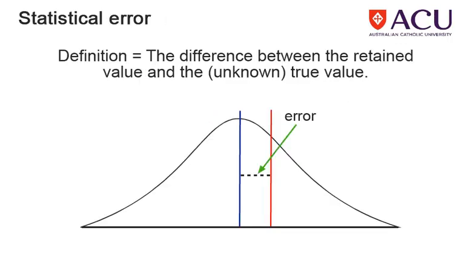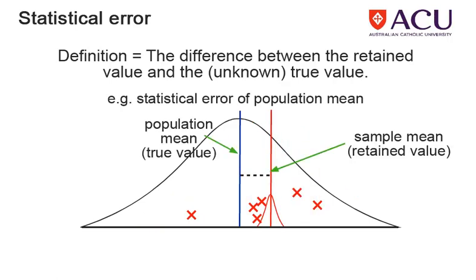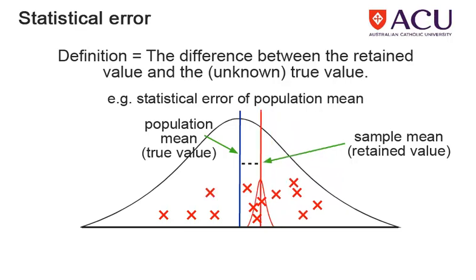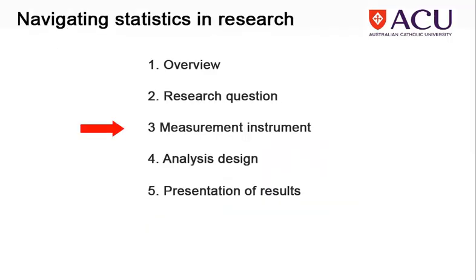Statistical error is defined as the difference between the retained value, or measured value, and the true value. It includes both bias and variations found in the sample or population. An example is the sampling error, which is the statistical error of estimates of the mean. As we increase the size of the sample, the error in our estimate of the population mean decreases.